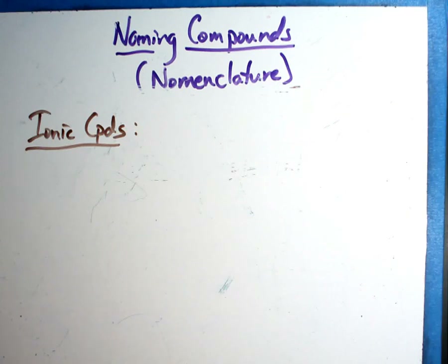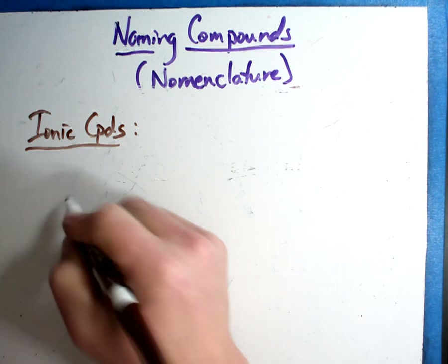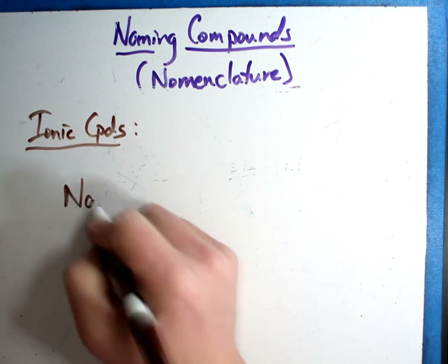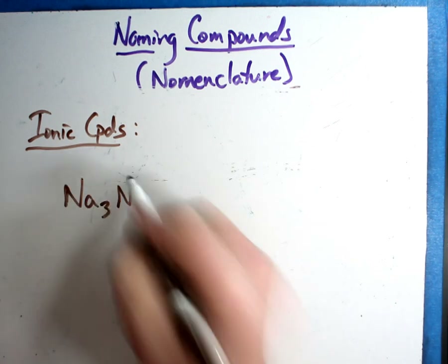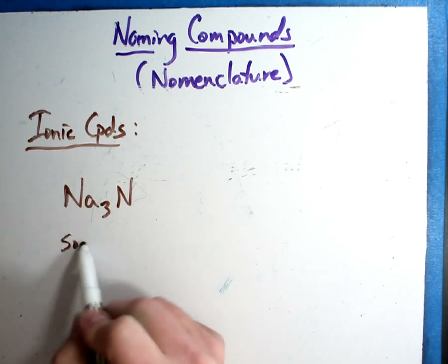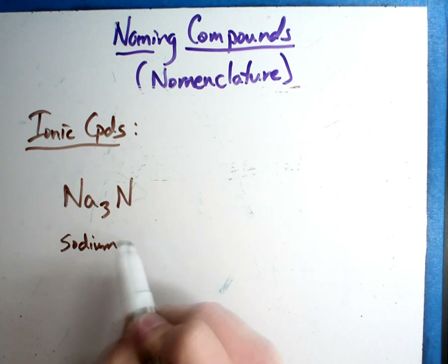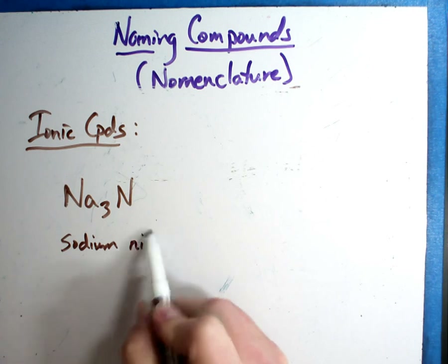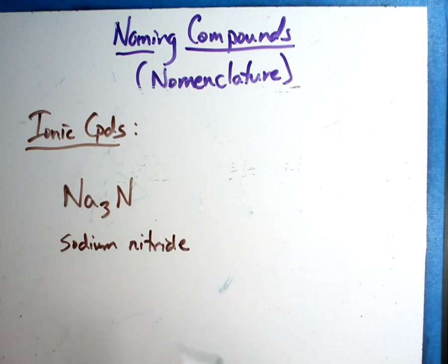In this video, we're going to talk about a little bit more complicated compounds. Let's take one like this. If you had this compound, what would it be called? Well, that's sodium and that is nitride. And many times, students will say sodium nitrate. We've heard of things like nitrate and sulfate and carbonate.